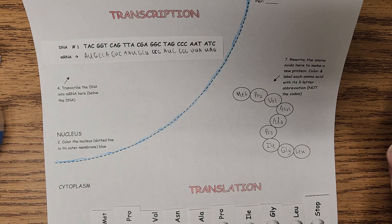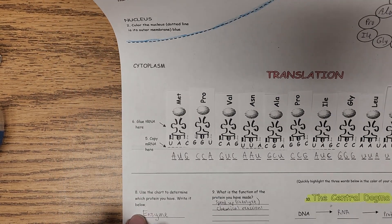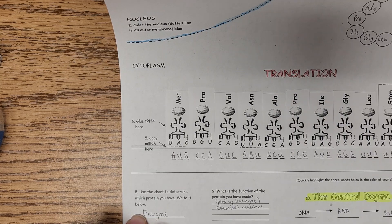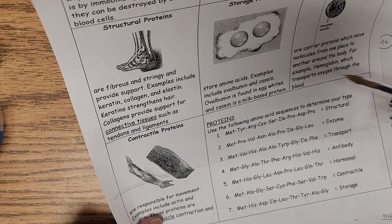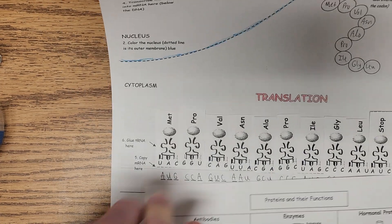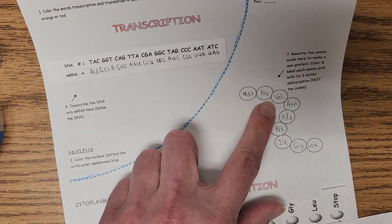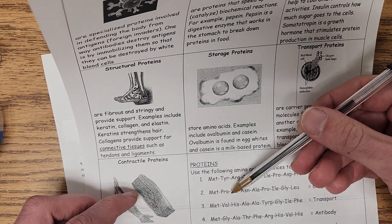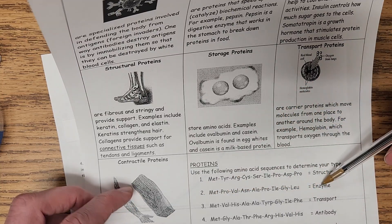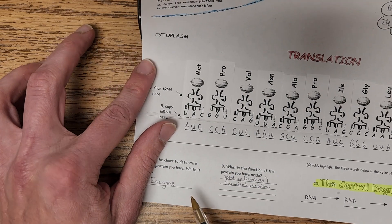Anyway, once you've done that, the next thing is to find direction eight, which is down here. Why did I get this answer enzyme? It's because I went to the reference chart down here, and it compared this to what I have here. See that? Methionine, proline, valine. Methionine, proline, valine. It's this one. It says enzyme. That's why I wrote the word enzyme down here.